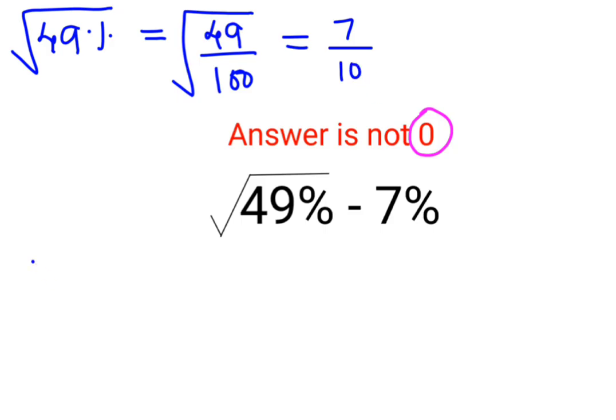So this comes out to be 7 upon 10 minus 7%, that is nothing but 7 upon 100.